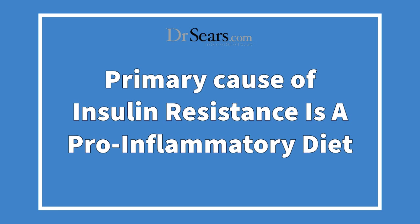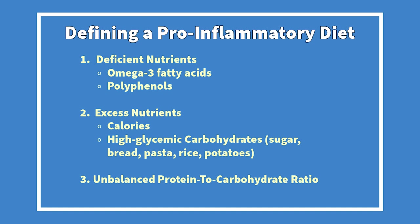What is the primary cause of insulin resistance? It turns out it's a pro-inflammatory diet. What is a pro-inflammatory diet? We can define it using this matrix. It could be one that has excess nutrients — such as excess calories, excess refined carbohydrates like bread, pasta, rice, or potatoes — or excess omega-6 fatty acids or excess palmitic acid. It could also be a diet deficient in omega-3 fatty acids and polyphenols, or one with an unbalanced protein-to-carbohydrate ratio. The more of your diet that has each of these three components, the more pro-inflammatory it is.